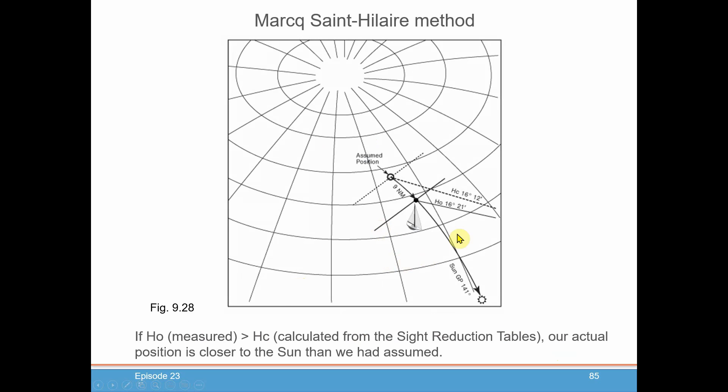Here's an example of how that might look on a chart. HO from the sextant greater than the HC. So here was our assumed position from the tables. It came out that HC was 16 degrees 12 minutes. But when we measured it with our sextant and did our corrections to it, we came out with 16 degrees 21 minutes. So the sun was higher in the sky than our assumed position would have been, so that must mean we're closer. And how much closer? It's just the difference between the two angles. That's the essence of the Marcq Saint-Hilaire method, why it's so easy to use. So the difference was nine minutes, which turns into nine nautical miles in the direction of the sun, which we got from our ZN.